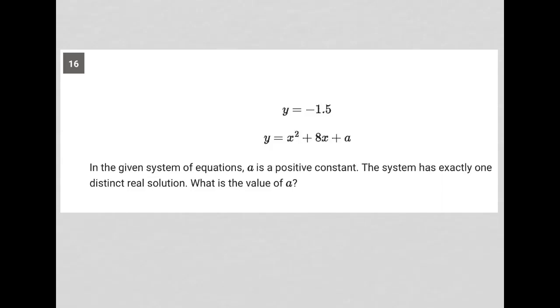So this question starts off by providing us with this system of equations here. This first equation in the system is just telling us that y is equal to negative 1.5, which means technically I could take that negative 1.5 and replace this y here with negative 1.5. So I'd have negative 1.5 equals x squared plus 8x plus a. Let's see if that's useful for me.